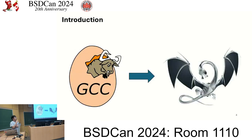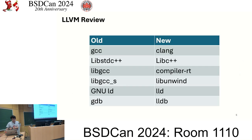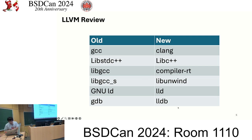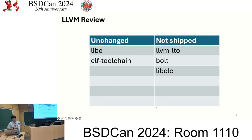FreeBSD changed its toolchain from GNU to LLVM about 10 to 15 years ago. There are some tool changes: the compiler originally was GCC, and now we have Clang. The C++ libraries changed, compiler runtime and other stuff like the linker and loader changed as well. Today's main topic is about LLDB, because the debugger also changed. There are some things that were not shifted when the toolchain changed.